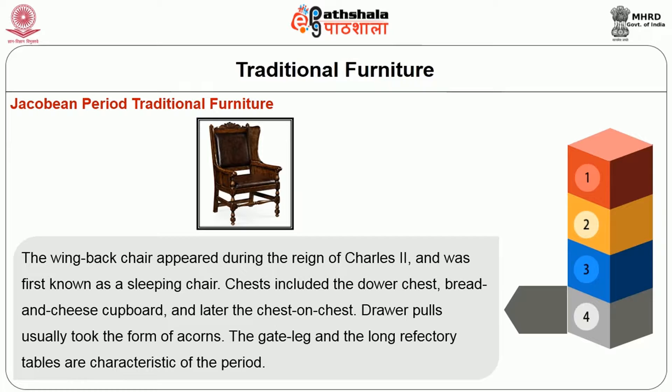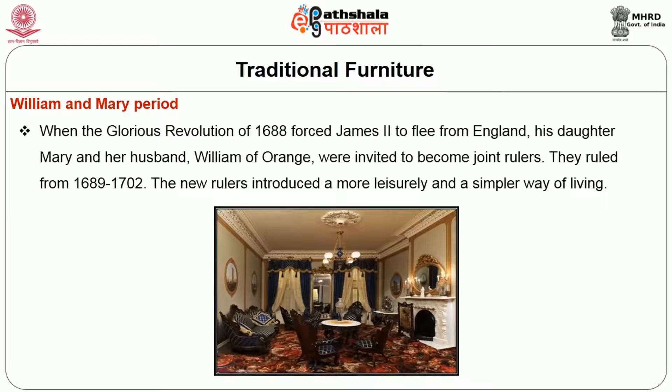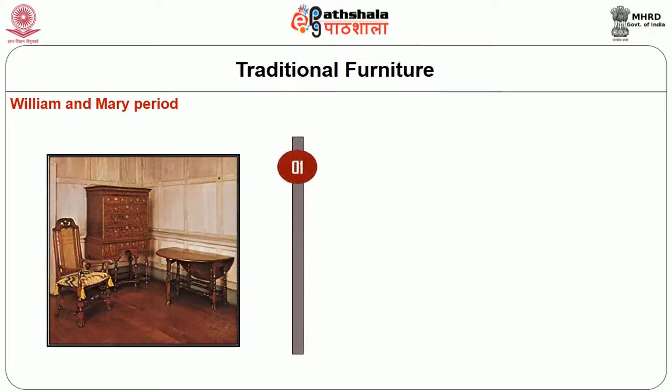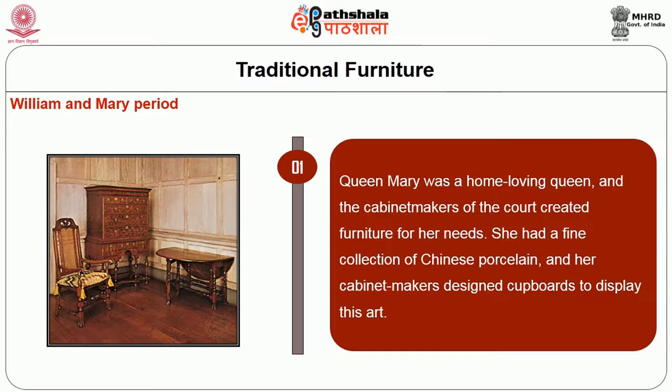William and Mary Period: When the Glorious Revolution of 1688 forced James II to flee from England, his daughter Mary and her husband William of Orange were invited to become joint rulers. They ruled from 1689 to 1702. The new rulers introduced a more leisurely and simpler way of living. Queen Mary was a home-loving queen and the cabinet makers of the court created furniture for her needs.